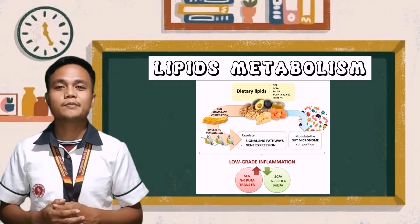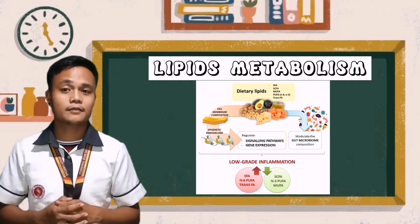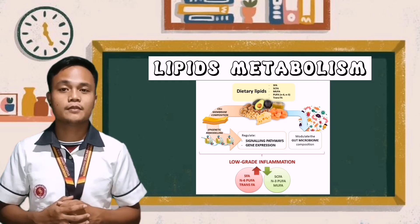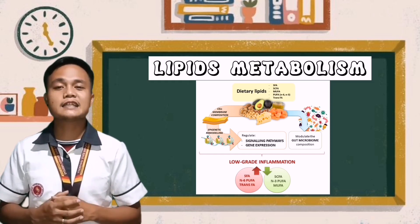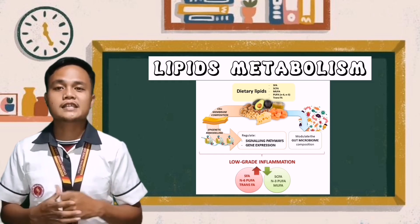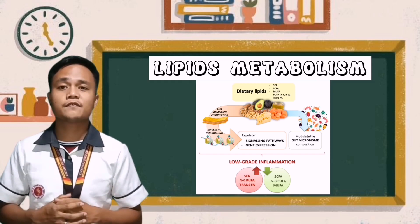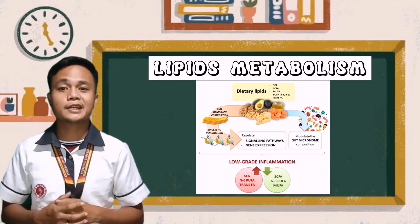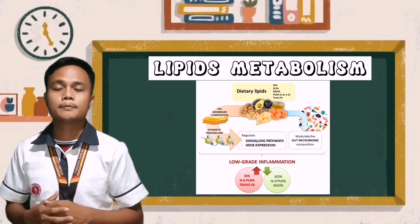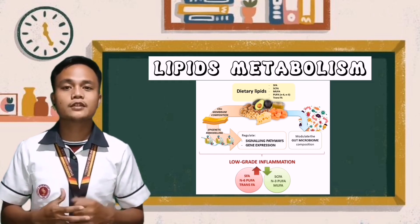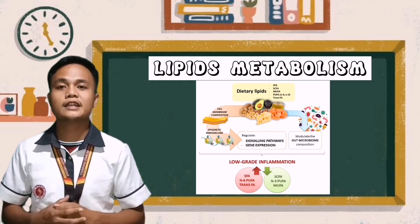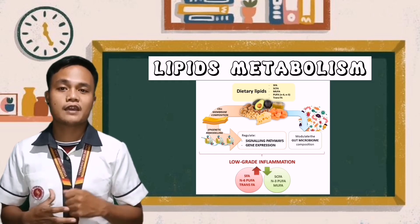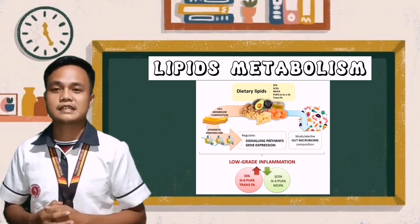Acid lipases can digest triacylglycerol or TAG derived from milk, lingual lipase, and gastric lipase. In addition, pancreatic enzymes break down choline esters, phospholipids, and TAG-containing long-chain fatty acids (LC-FAS) in the small intestine.